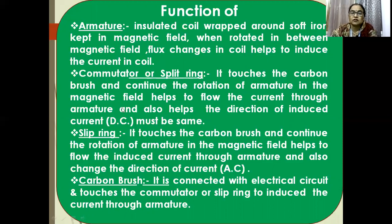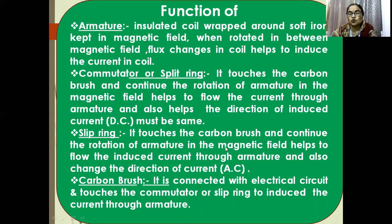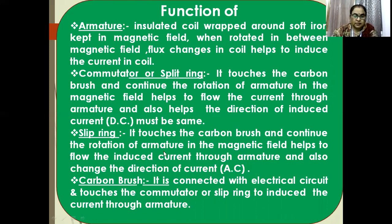For AC current, a slip ring is used, and for DC current, a split ring is used. The carbon brush is connected with the electrical circuit, touches the commutator or slip ring to induce the current through the circuit. In one half-circle the current is positive, and in the other half-circle the current is negative, which is how AC and DC currents are differentiated.